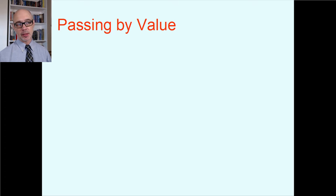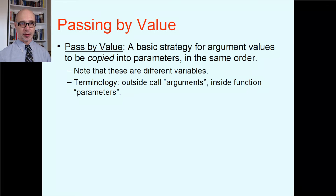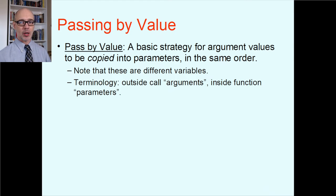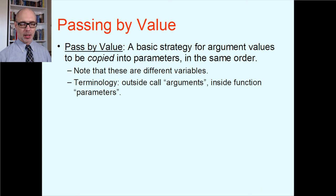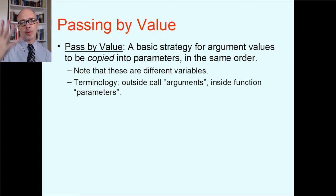Functions only have access to the data that gets passed in by the parameters. There are actually two ways that can happen. The normal default way is called passing by value: argument values get copied into the function, making a copy of the data into new variables called parameters, copied in the same order as the arguments. These are different variables — you have variables in the calling context and parameter variables inside the function. If you change one, you are not going to be changing the other.